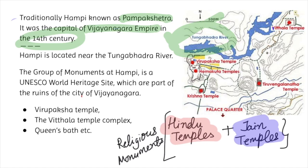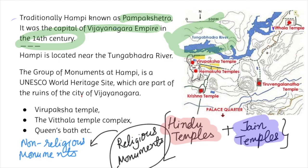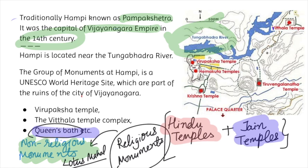Apart from religious monuments, some non-religious monuments like Lotus Mahal, Queen's Bath, and Elephant Stables are also found at Hampi.